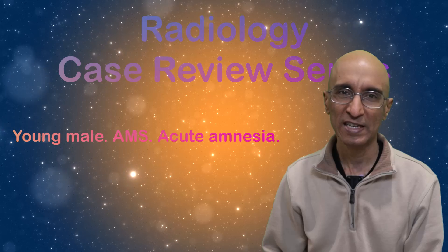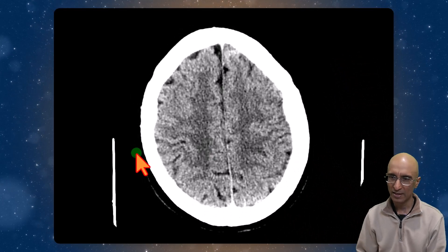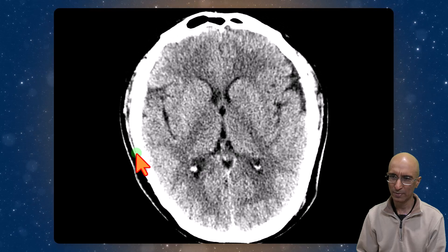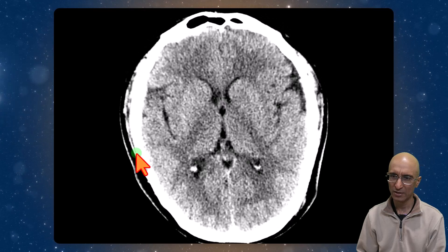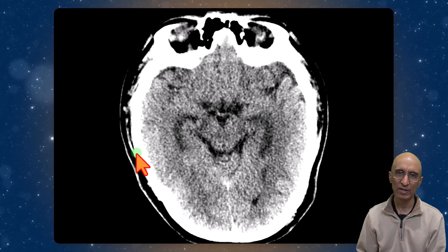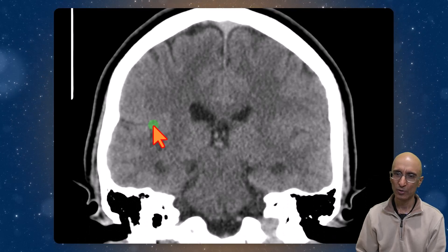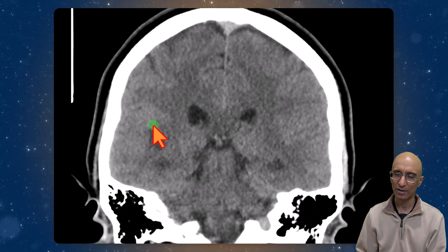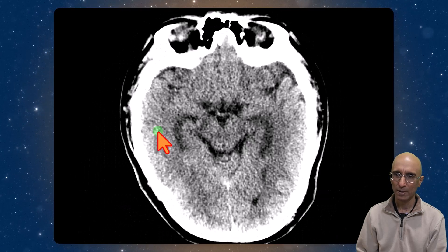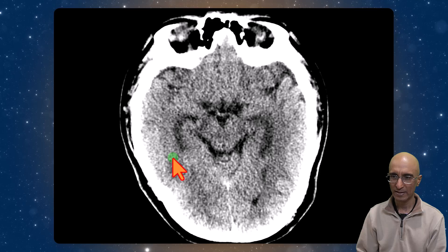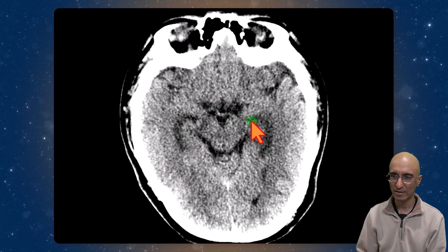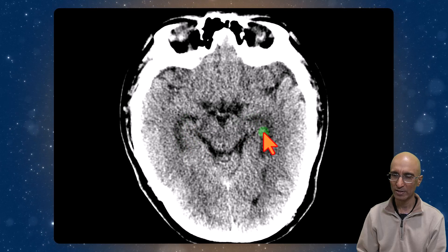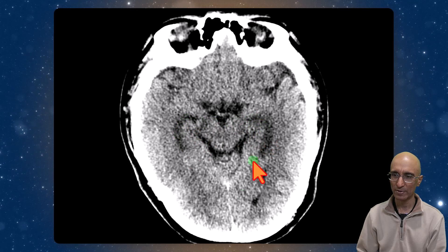The patient initially underwent a CT head examination. As I scroll through, we don't see any obvious acute hemorrhage, mass effect, or midline shift. The study was read out as negative. I'm going to show you coronal reconstructions as well. Again, we don't see any obvious acute abnormality, but upon closer evaluation we can see there is symmetric hypodensity in the temporal lobes with a comma-shaped configuration in the region of the hippocampus.